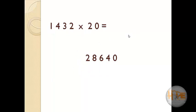Here we have to multiply 1432 with 20. So multiply every digit with 2. 2 into 1 is equal to 2, 4 into 2 is equal to 8, 3 into 2 is equal to 6, 2 into 2 is equal to 4, and add 0. So the answer is 28,640.